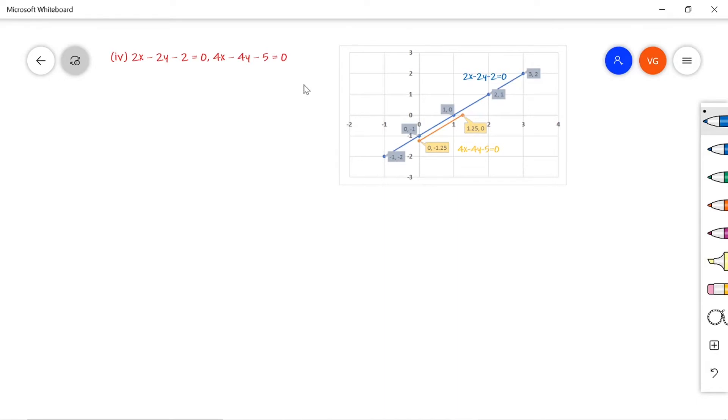These two equations are according to the standard form a1x plus b1y plus c1 equals 0. Now we need to write down the data given: a1 equals 2, b1 equals minus 2, and c1 equals minus 2.